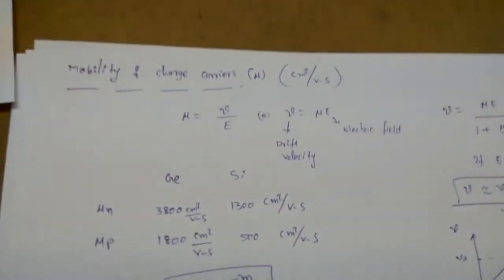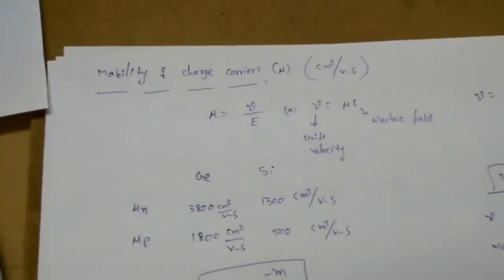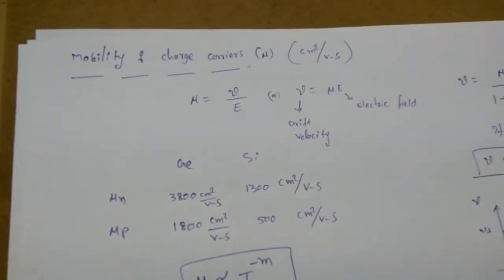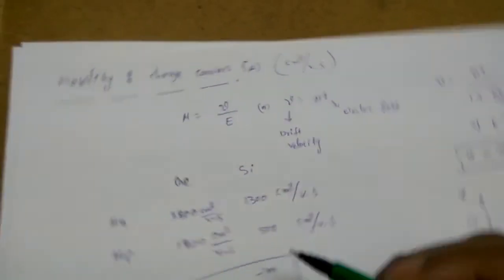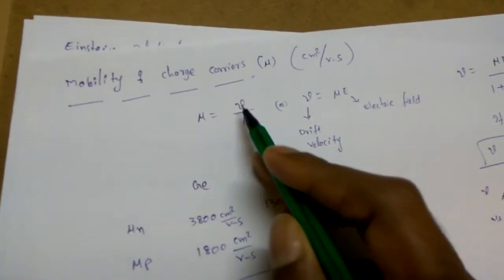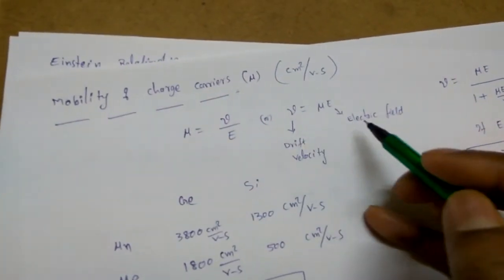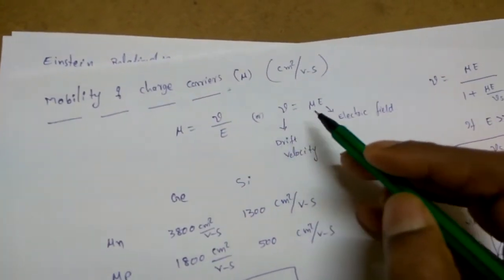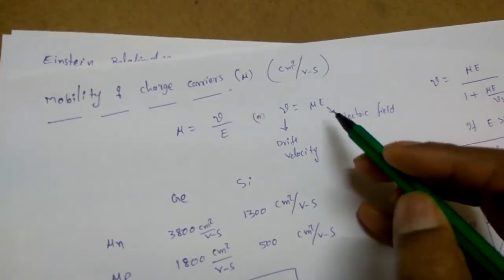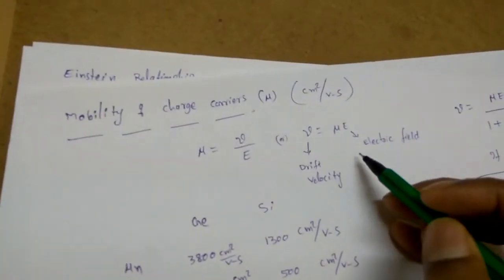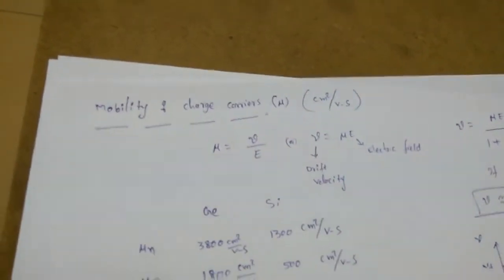The next topic is mobility of charge carriers, denoted mu. Mobility describes how fast electrons or holes move. Mu equals drift velocity divided by electric field, so drift velocity v = mu × E. This drift velocity is how much the electron moves in response to the applied electric field.